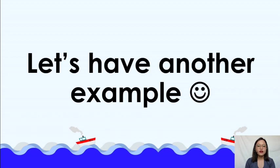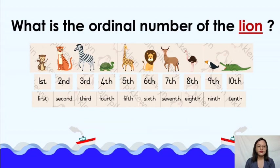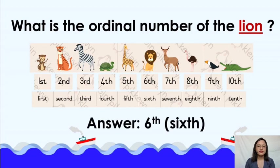Let's have another example. What is the ordinal number of the turtle? Good job! Fourth. Let's have another one. What is the ordinal number of the lion? Very good! Sixth.